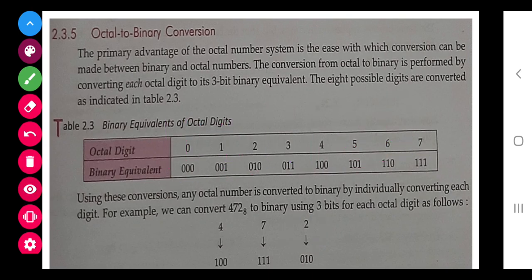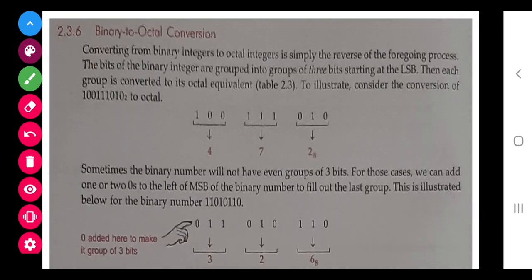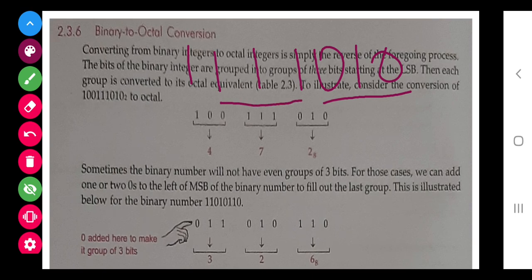Next, binary to octal. Very simple. Suppose I am having a number 1111010. First of all, I will take from the back three digits, three digits, and this is alone, so I will add two more digits.